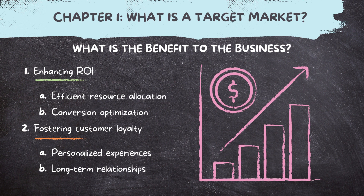Next is conversion optimization — this is where you can really start tailoring your marketing efforts to turn likes into sales. When you target to your market's needs and preferences, you're more likely to convert leads into customers, and this increased conversion rate directly impacts your ROI. Think of it this way: if you're just trying to get likes or vanity metrics, how are those translating into actual sales? You want to draw customers further down the optimization funnel to actually purchase from you.